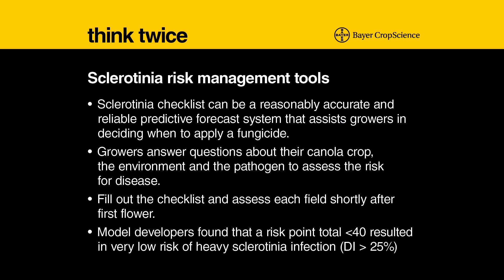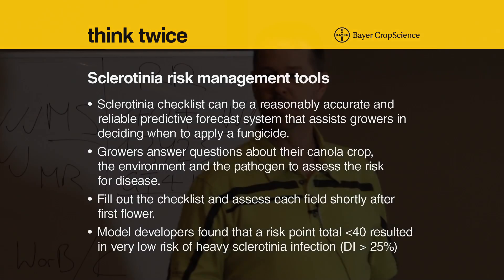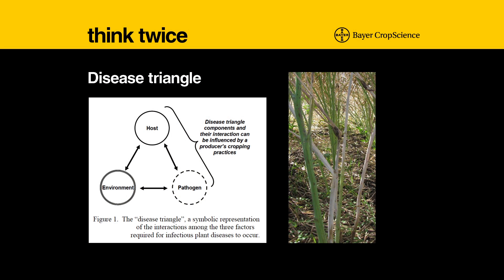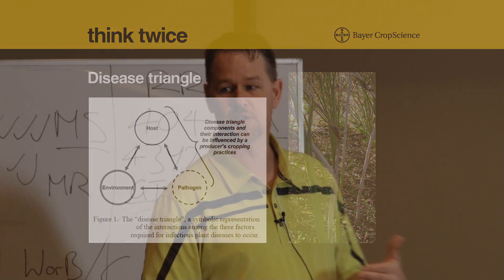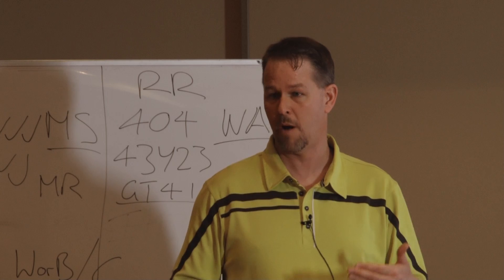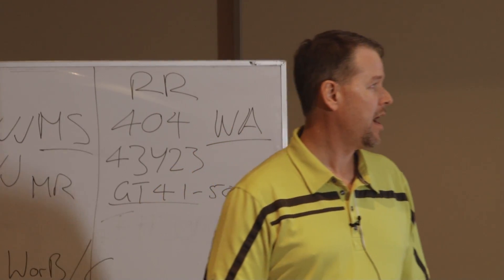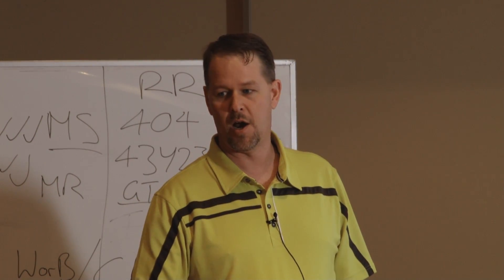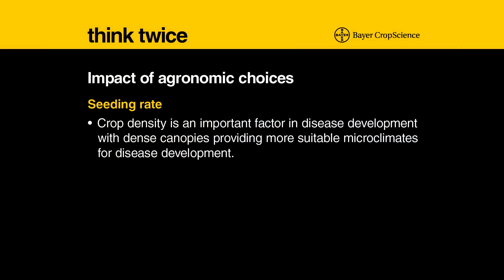As you get higher and higher above 40, the likelihood of having a meaningful response from a fungicide application is quite likely. This shows that for a disease to become problematic in a crop, you need to have a sufficient amount of the pathogen, weather that's conducive for that particular pathogen, and a susceptible host. The components of this disease triangle and their interaction can certainly be influenced by a producer's agronomic cropping practices. One of the agronomic choices a producer makes every year is in his establishment — seeding rate is one thing, and crop density as it relates to seeding rate is an important factor for disease development.